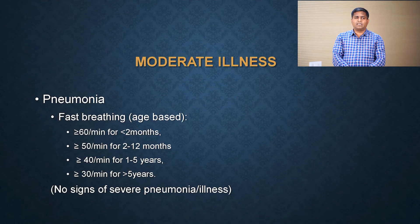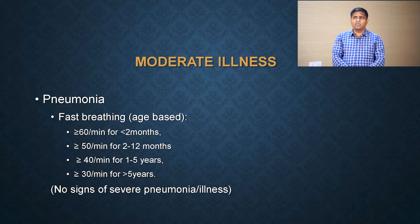In case the child is having moderate symptoms, it may present with pneumonia which is manifested as fast breathing. There are different age-based cut-offs to define fast breathing: if the child is less than 2 months, more than 60 per minute; between 2 to 12 months, more than 50 per minute; between 1 year to 5 years, more than 40 per minute; and more than 5 years, if the respiratory rate is more than 30 per minute, it is considered moderate illness.